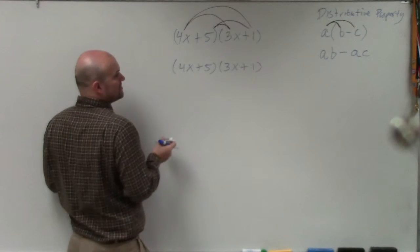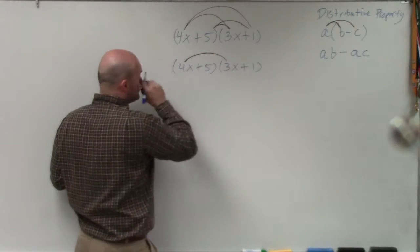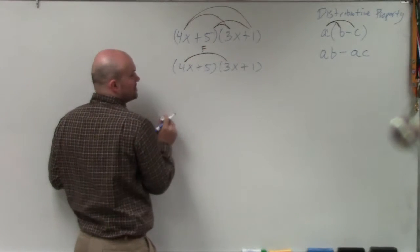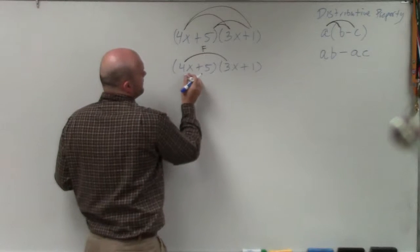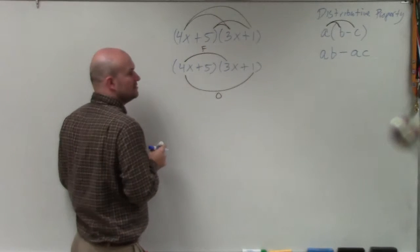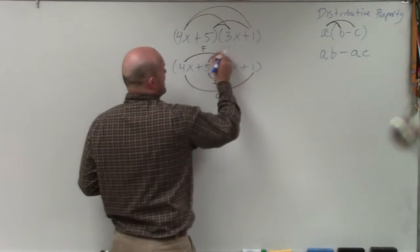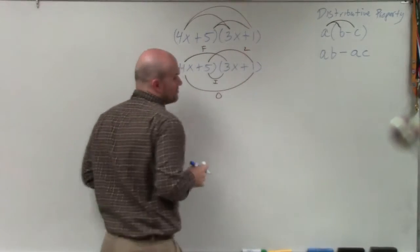So what foil represents is basically multiplying the first terms in each expression, the outer terms in each expression, the inner terms in each expression, and then the last terms in each expression.